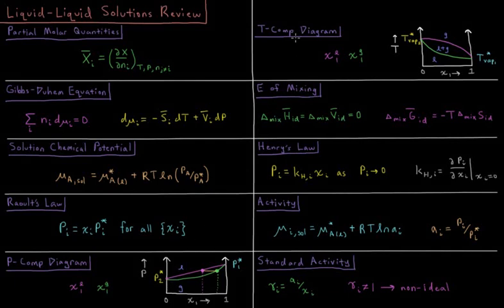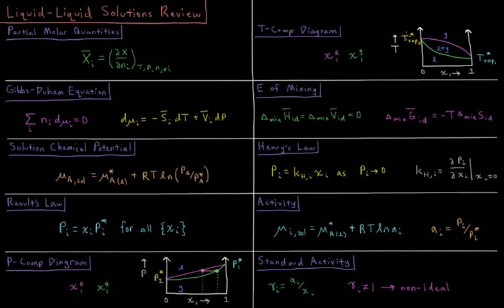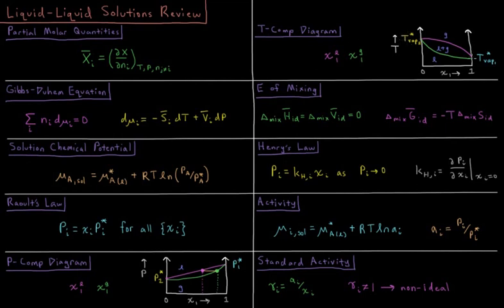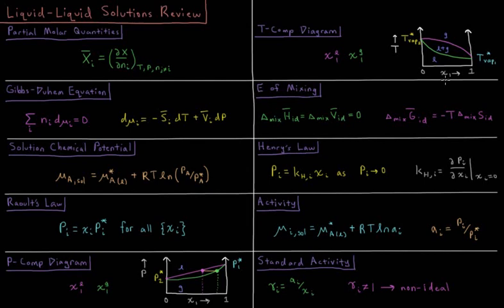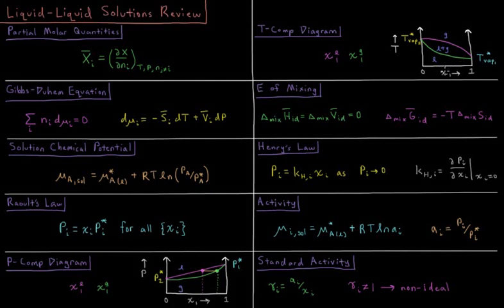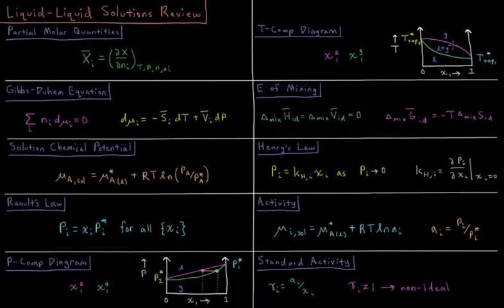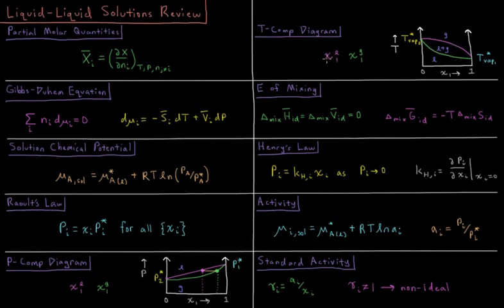We can do the same thing for temperature using a temperature composition diagram and the vaporization temperatures or boiling points of each of the substances, where when it's above both of them they're gas, when it's below both of their temperatures it's liquid, and in the middle we get a mixture where we can predict how much of the liquid and the gas has a mole fraction of each of them using the difference in these two values.